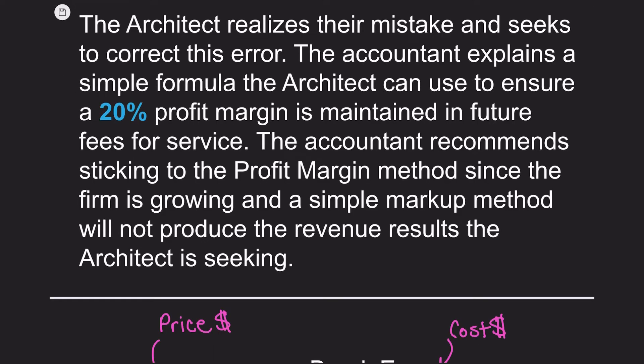The architect realizes their mistake and seeks to correct this error. The accountant explains a simple formula the architect can use to ensure a 20% profit margin is maintained in future fees for service. The accountant recommends sticking to the profit margin method.